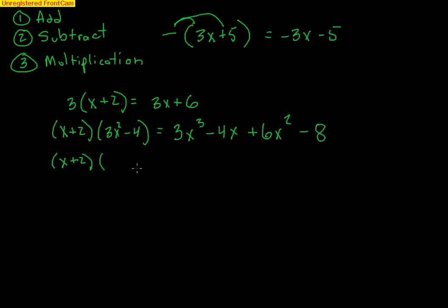You could also do a binomial x plus 2 times a trinomial 3x squared minus 4x plus 5. And you just have to do repeated distribution here. Distribute the x to those three terms. Distribute the 2 to those three terms. You could do that as well.